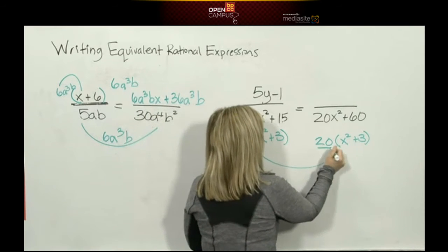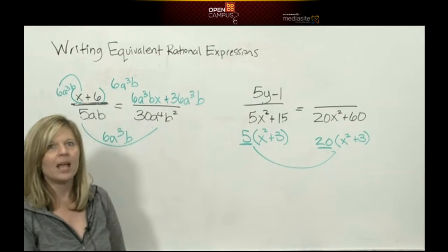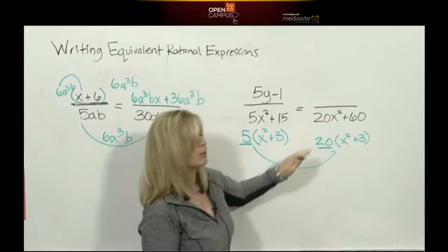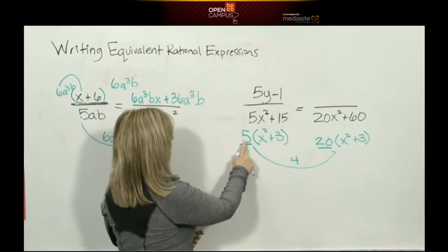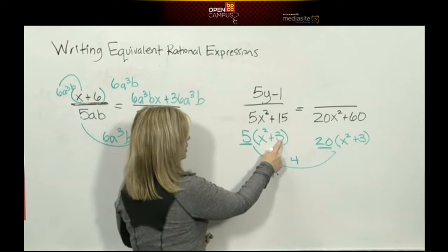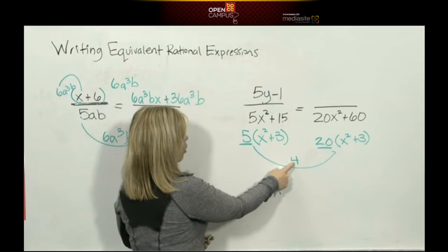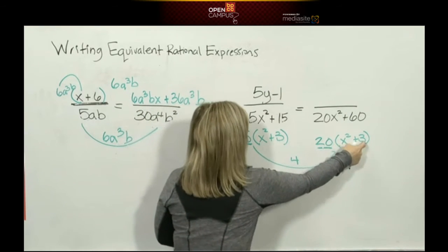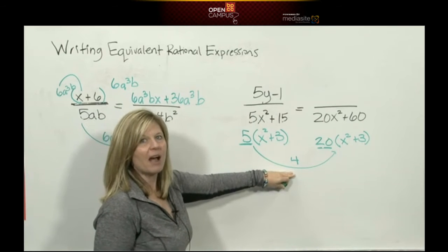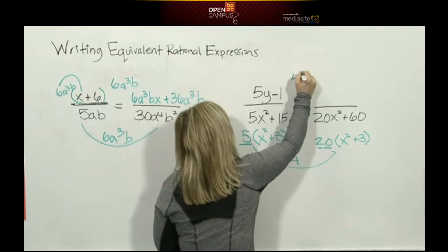And how does a 5 become a 20? That's right, we multiplied by 4. So if you had 5(x²+3) and you multiplied it by 4, 5 times 4 would be the 20(x²+3). Well, if you multiply the denominator by 4, then you have to multiply the numerator by 4.